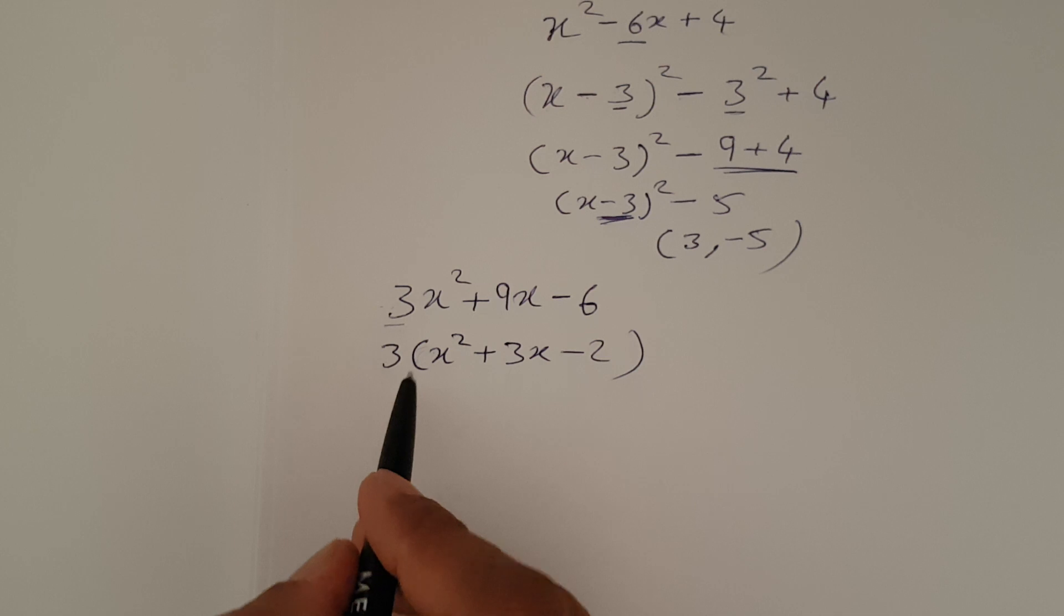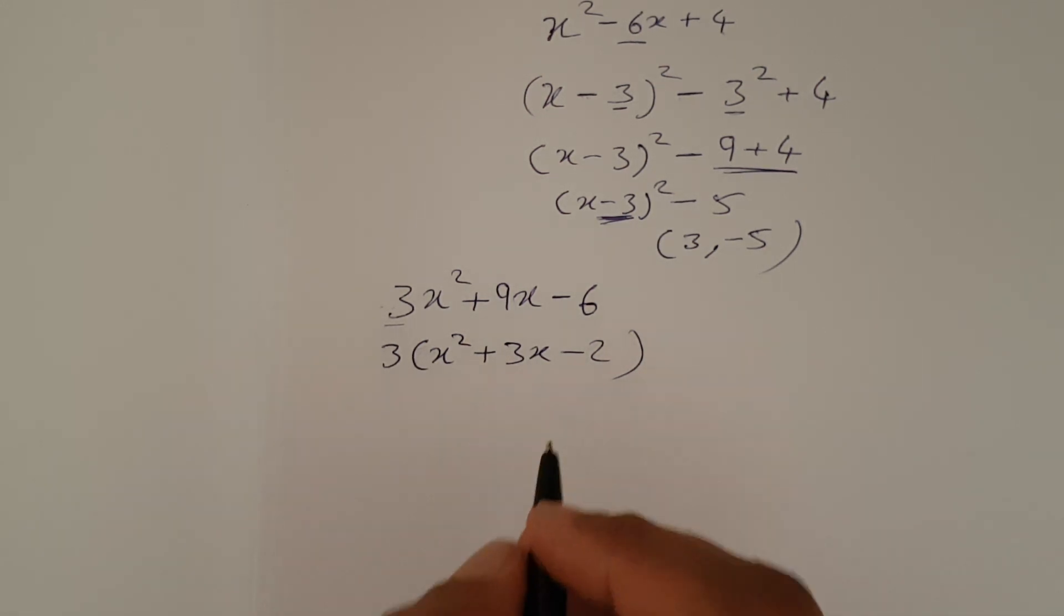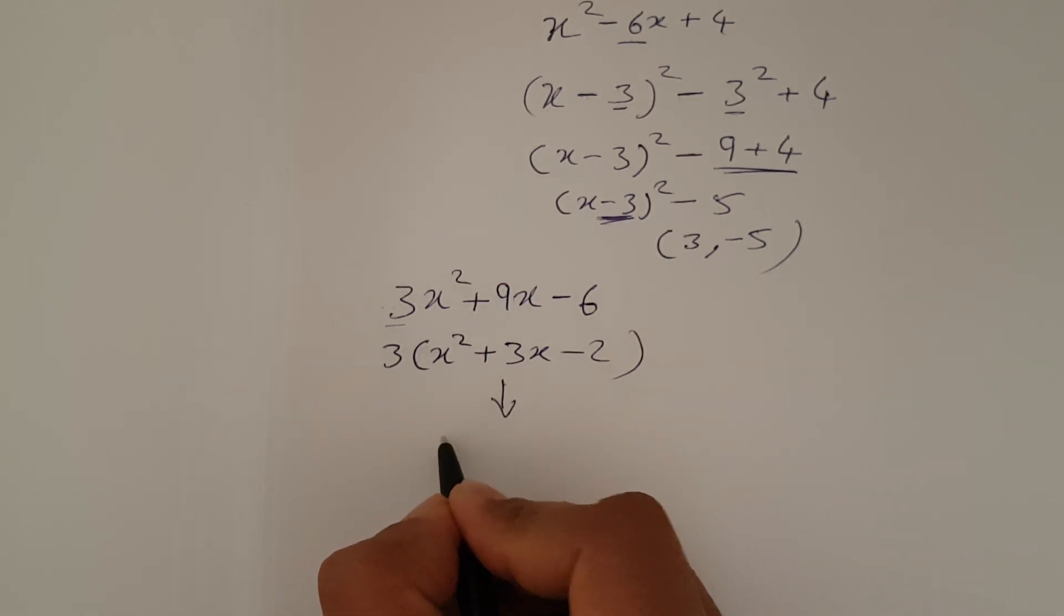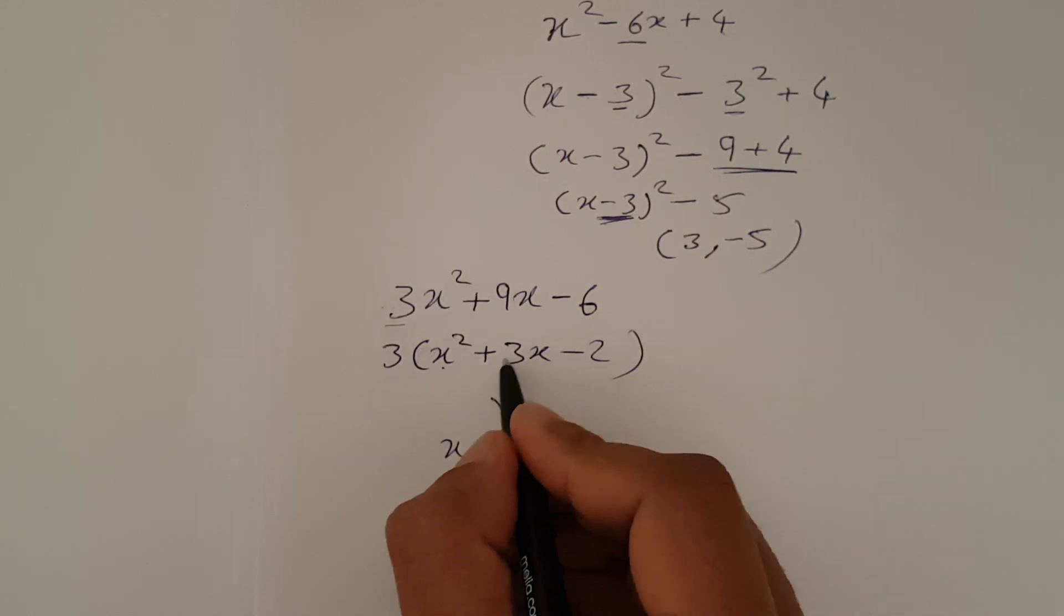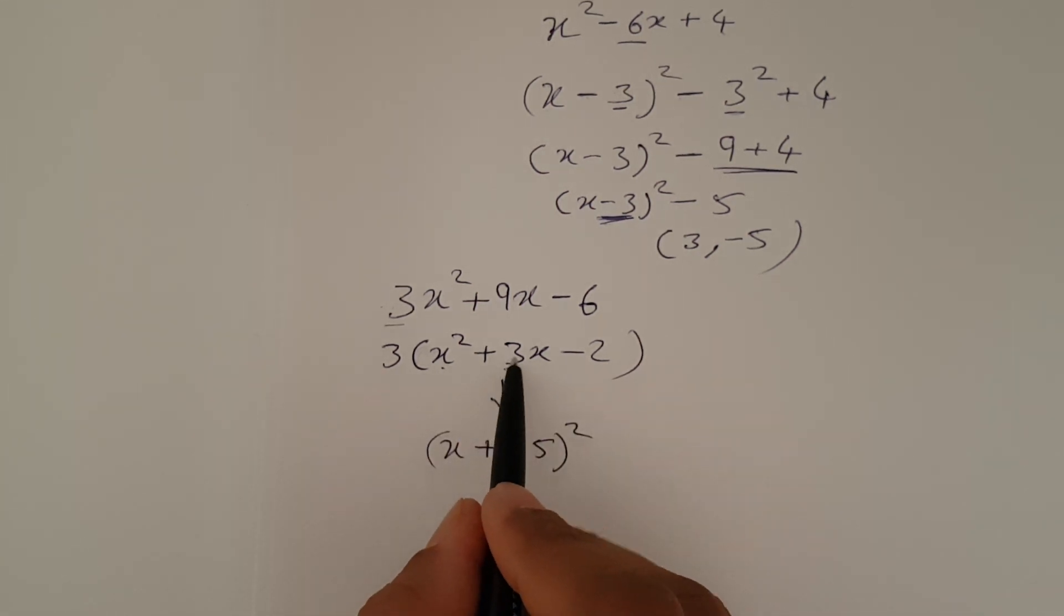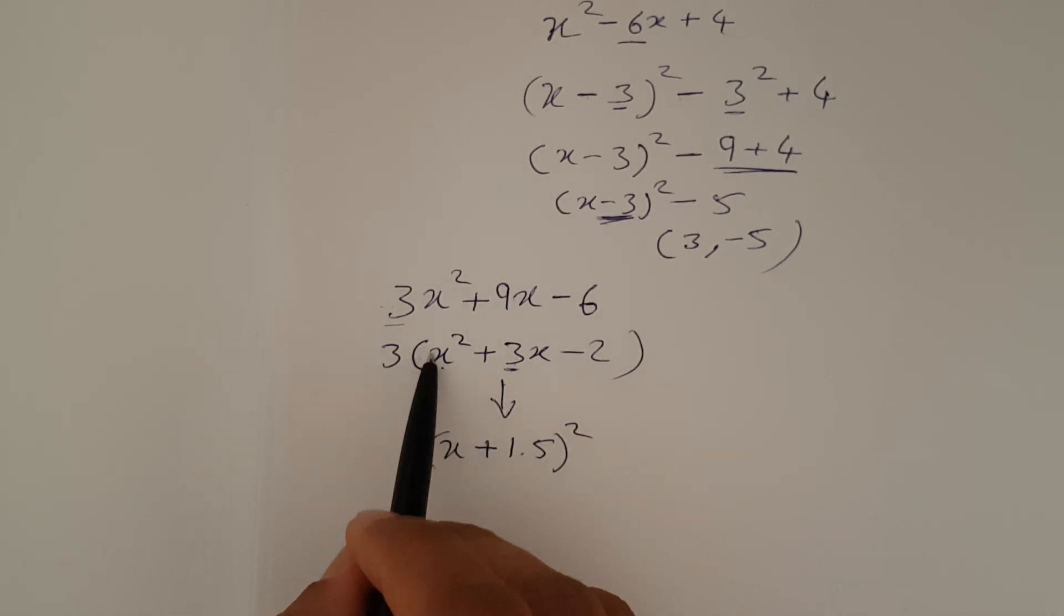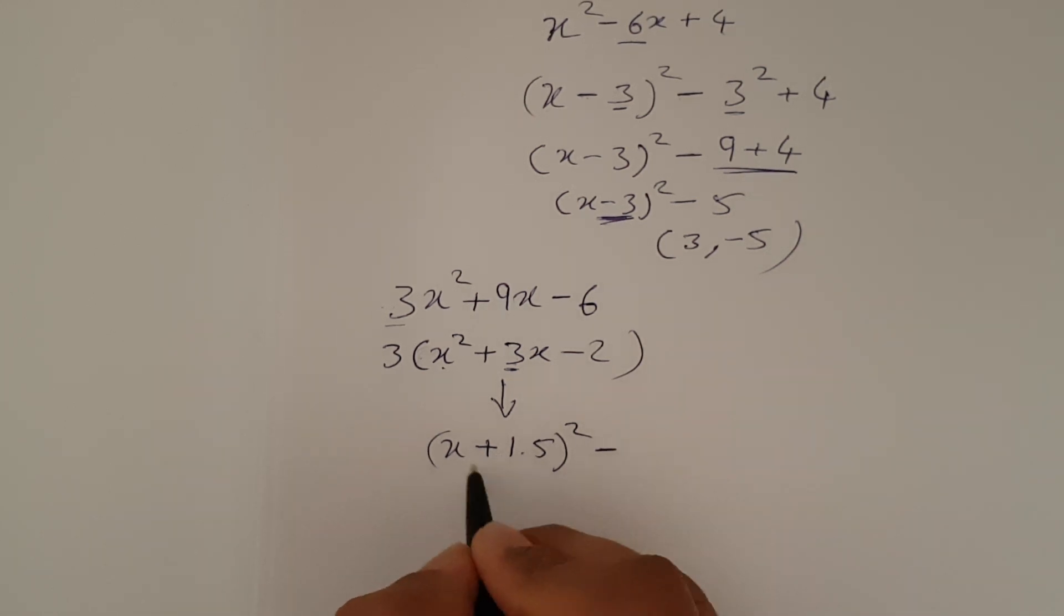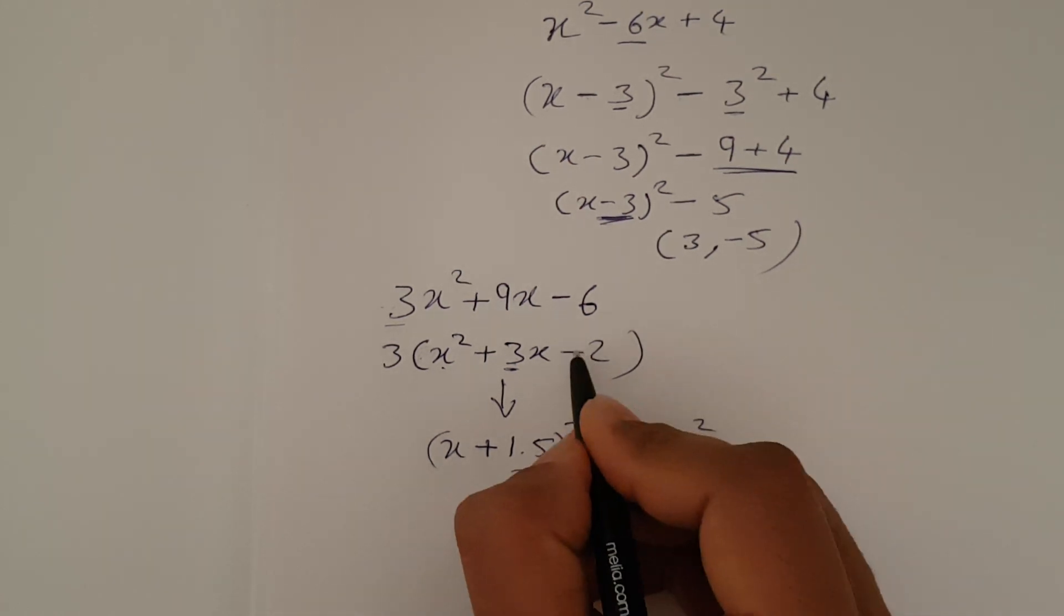Always make sure that there is nothing in front of x square before you start completing the square. Then after that, run your completing the square normal process, which is x plus half of the middle number, which is 1.5 whole square. I repeat, half of the middle number. First thing, there shouldn't be anything in front of x square, then half of the middle number. Then always minus, irrespective of if you have plus or minus here, always minus, then square this number and minus 2.